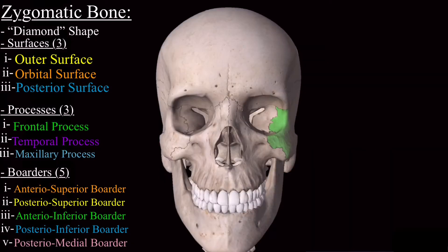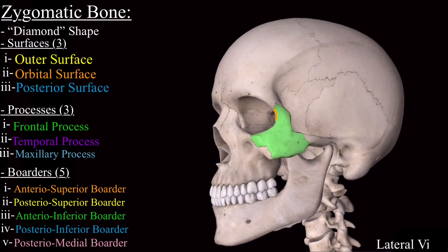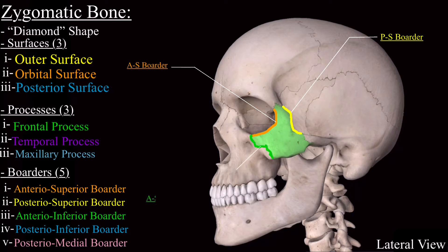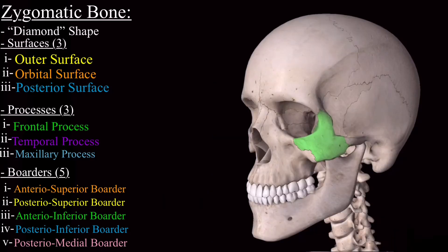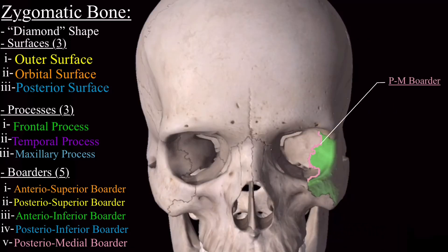To understand the borders more clearly, they can also be shown on the articulated skull. In the lateral view, the anterior superior and posterior superior borders are visible, as are the anterior inferior and posterior inferior borders. In the orbital view, the posterior medial border is identifiable.